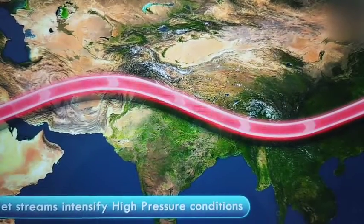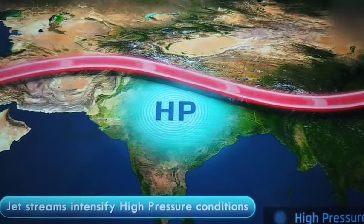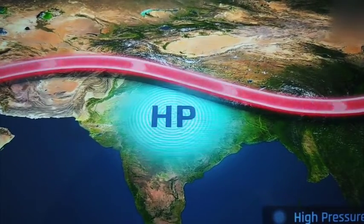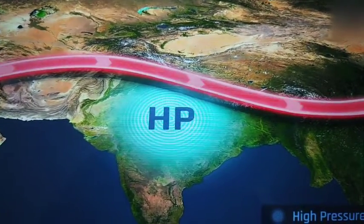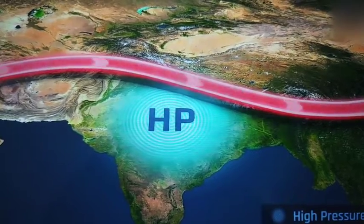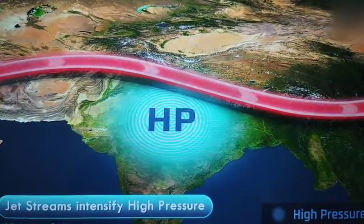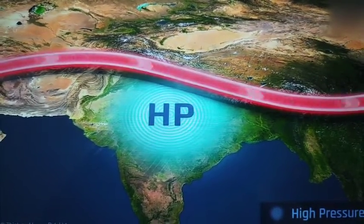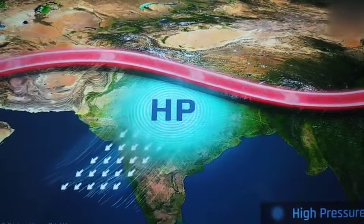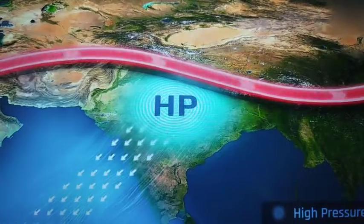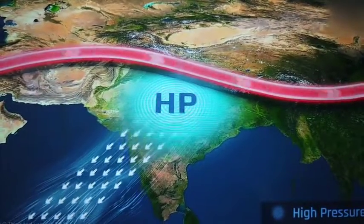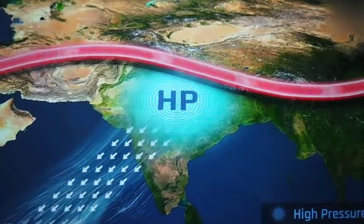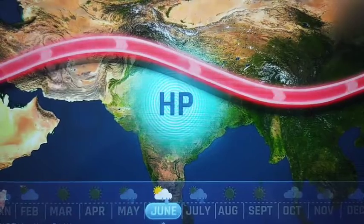Jet streams intensify high pressure conditions. The reason for this occurrence is a little complicated and you will learn about it in your higher grades. But for now, just remember that jet streams intensify high pressure. As long as these high pressure conditions prevail, winds flow from the northeast direction from land to sea, and till such conditions persist, the onset of the monsoon will be delayed.